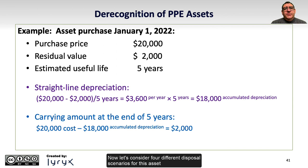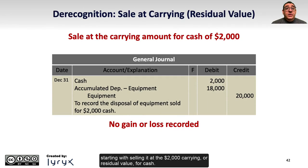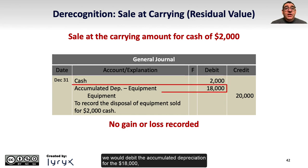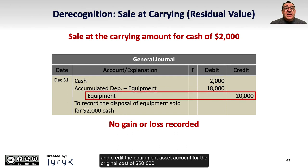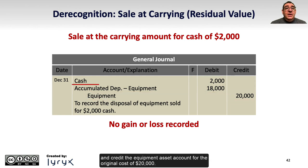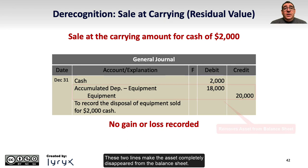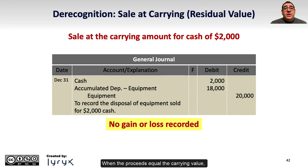Now let's consider four different disposal scenarios for this asset, starting with selling it at the $2,000 carrying or residual value for cash. We would record the derecognition with a journal entry that debits cash for the $2,000 proceeds, debit accumulated depreciation for $18,000, and credit the equipment asset account for the original cost of $20,000. These two lines make the asset completely disappear from the balance sheet. When the proceeds equal the carrying value, there is no gain or loss recorded, and our journal entry balances.